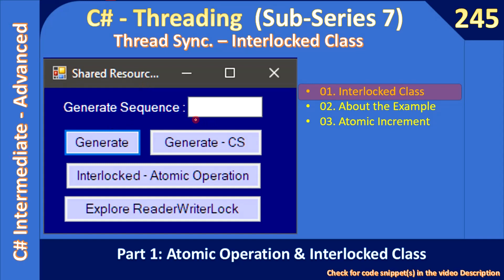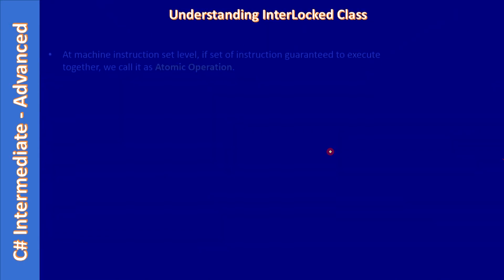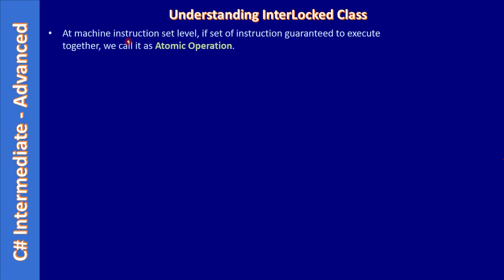Hello friends, welcome to C# Intermediate to Advanced tutorial. You are watching new sub-series 7. In this sub-series we will learn how to use thread synchronization using the Interlocked class. In this first video we will get introduced to what is an atomic operation and how it can be achieved through the Interlocked class.